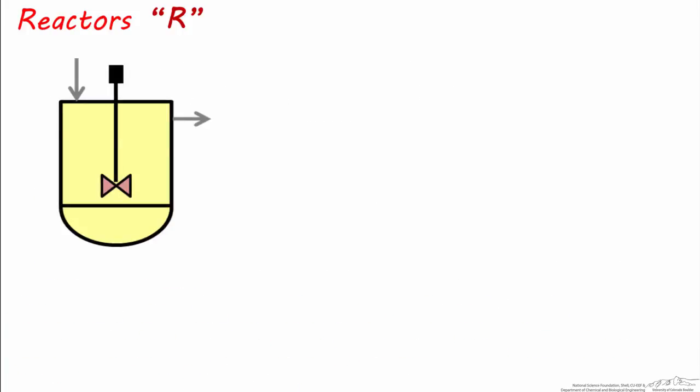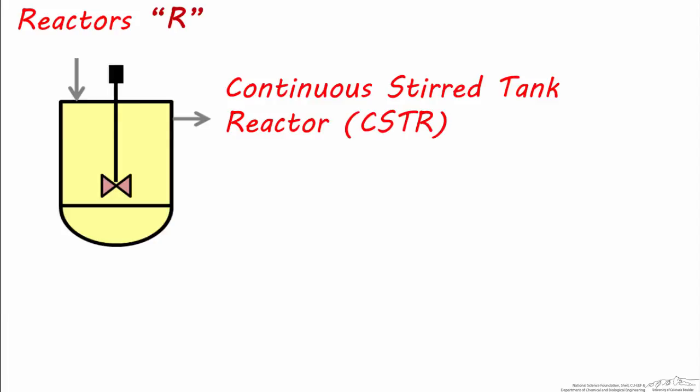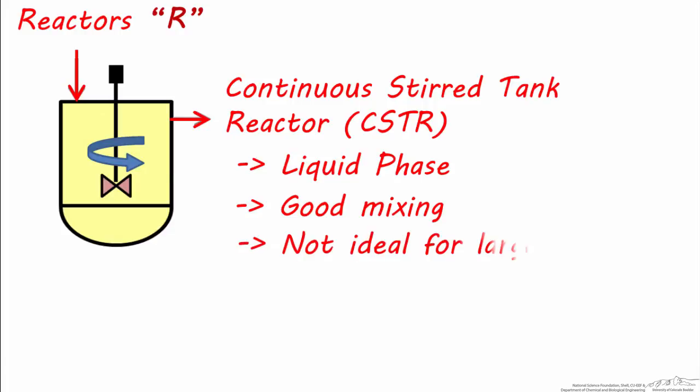This is the symbol for a continuous stirred tank reactor. It's called that because it features continuous flow of liquid in and out of a tank, and the contents are mechanically agitated using a stirrer and motor. This type of reactor is best for liquids which need to be well mixed. Because of size and residence time limitations, it's not usually used in large processes that make hundreds of tons of product per day.